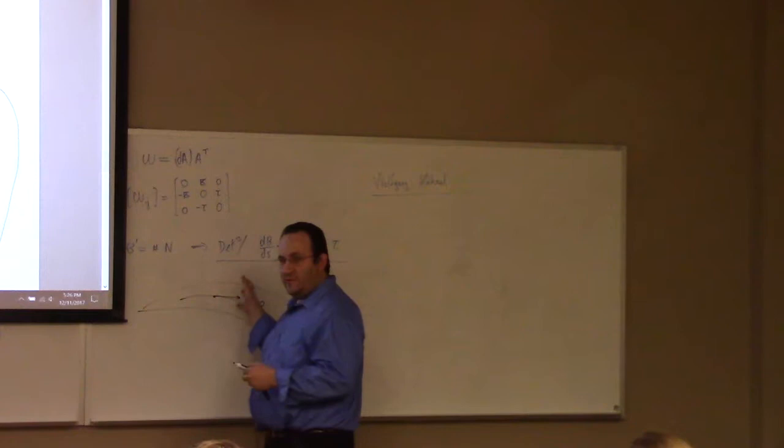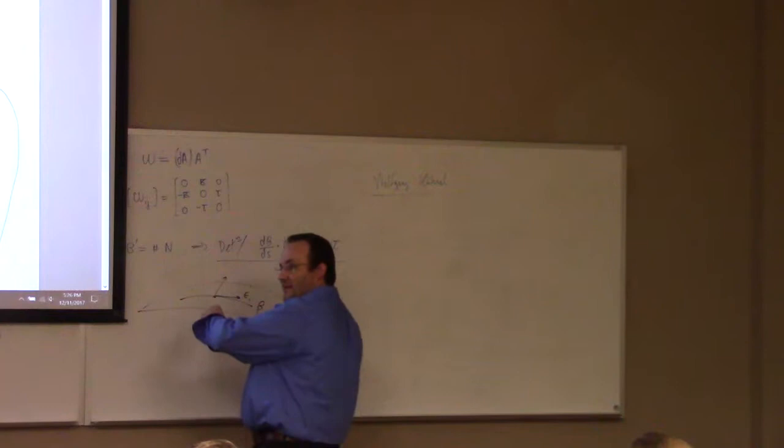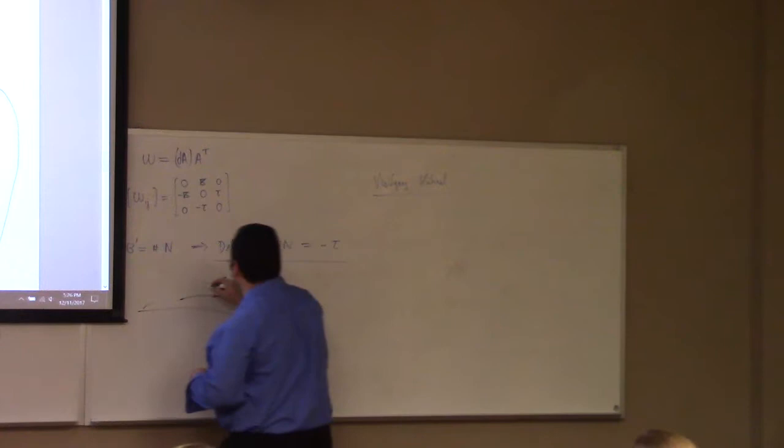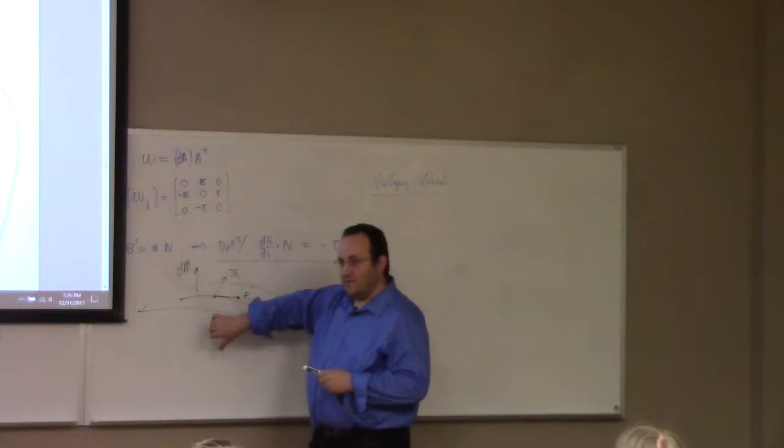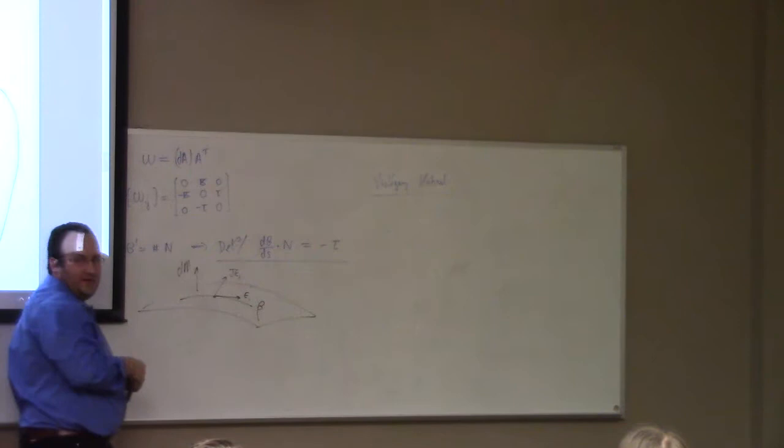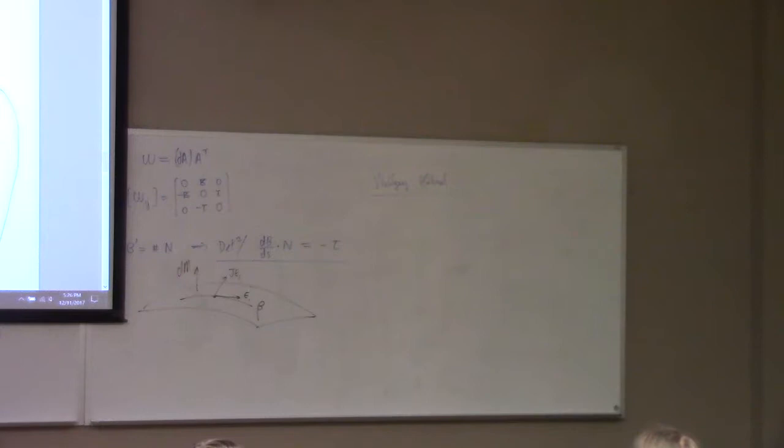J is a rotation by 90 degrees induced from the orientation. If the orientation is basically upward, then that would be J of E1 — tangent to the surface but 90 degrees back. If the orientation points the other way down, then J would rotate E1 in the opposite direction. So J of E1 may or may not be the normal from Frenet theory.